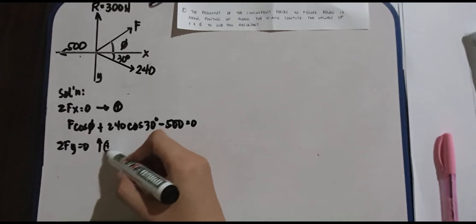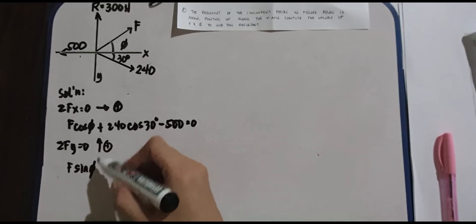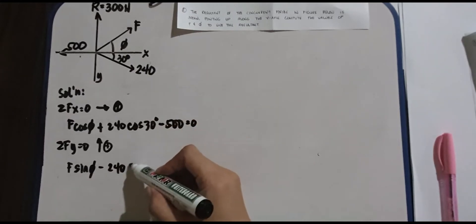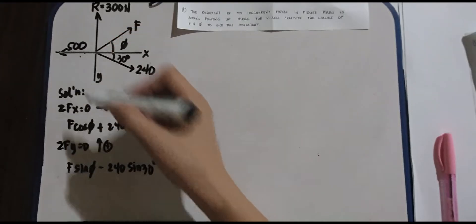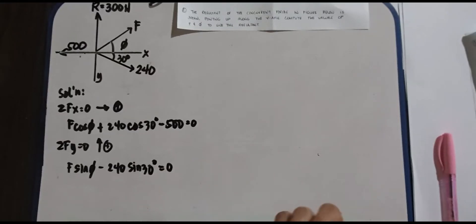Y is positive. So we have F sine of phi, minus 240, because it's going down, sine of 30 degrees. Does this have a component? No, so that's removed. Equals 0. What is your summation Fy? We can get that now.